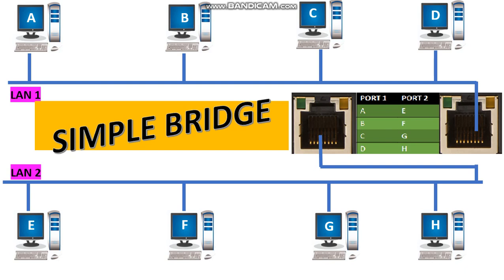A simple bridge is a bridge which connects two segments or two LANs. It maintains two tables which contain port numbers and MAC addresses of systems attached to those port numbers. These tables maintain information like: systems A, B, C, D are connected to port 1, and systems E, F, G, H are connected to port 2.